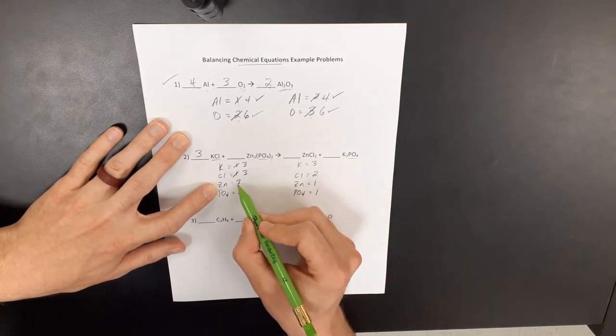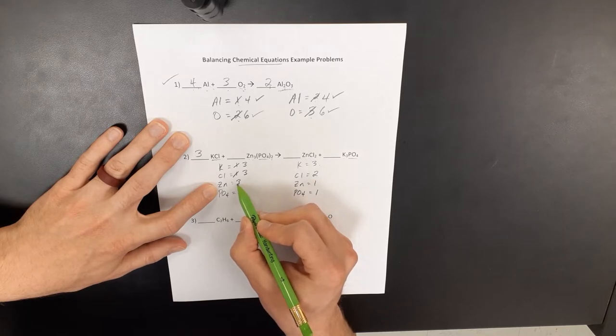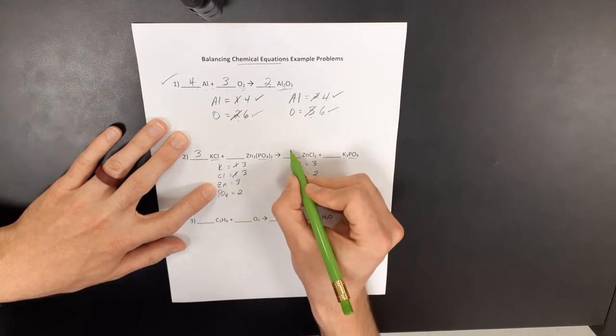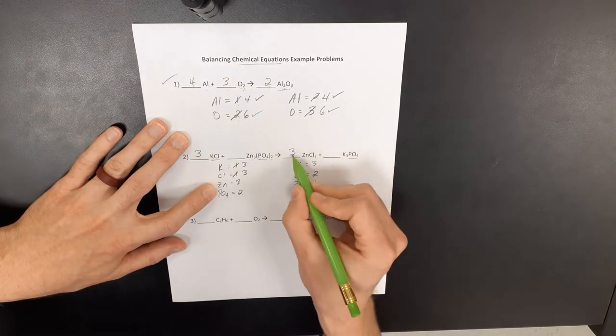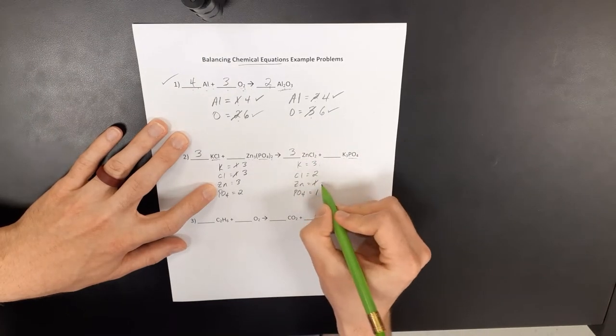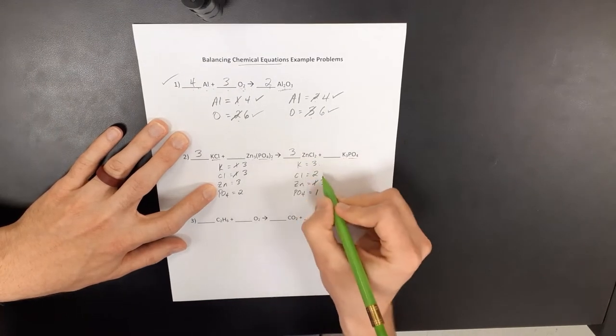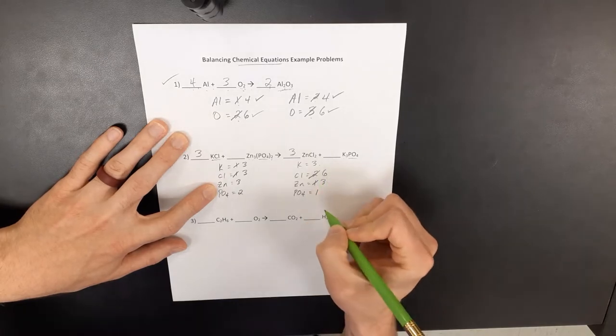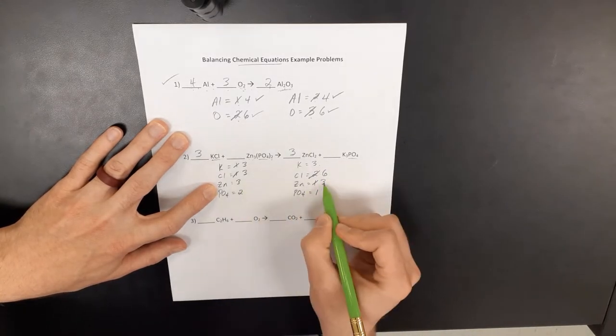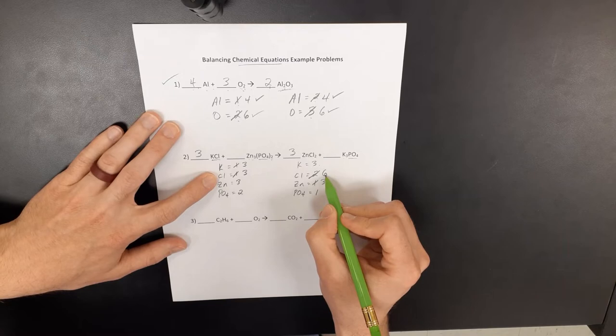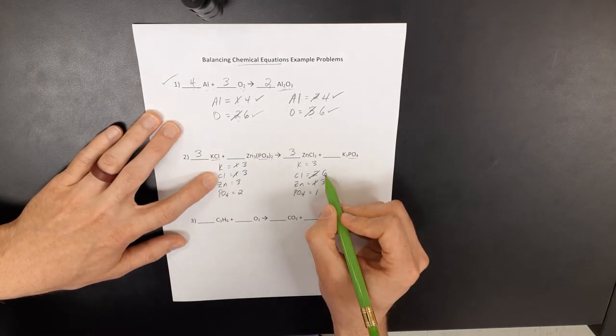And I can see the chlorine on the other side only have two, so I already know there's going to be an issue we're going to run into here in just a moment. All right, and then wherever we want to go next. So maybe we say, okay, well, zinc. All right, here we've got three zincs and one zinc, so I'm going to need at least three on this side. So three times one is three, three times two is now six. Okay? So I just fixed zinc, but now my chlorine is messed up again over here.